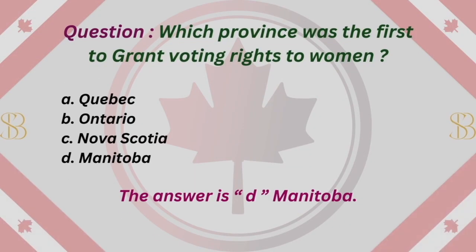Question: Which province was the first to grant voting rights to women? A. Quebec. B. Ontario. C. Nova Scotia. D. Manitoba. The answer is D. Manitoba.